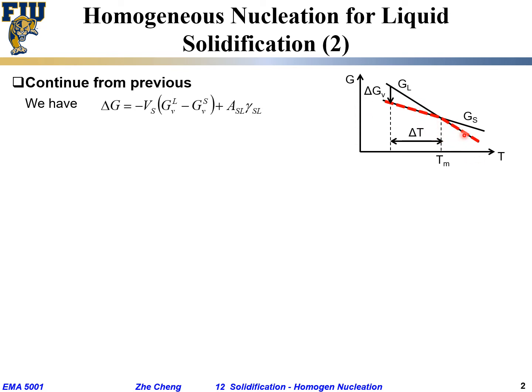For liquid and for solid, they will cross at Tm for melting point. Let's say we are doing solidification at a temperature delta T below the melting point. Delta Gv is defined as the so-called volume free energy change from liquid to solid. The free energy change delta G — final state minus initial state — gives two terms: the first is the volume term for the small solid nucleus going from liquid to solid, and the second is the interfacial area and its associated energy contribution.